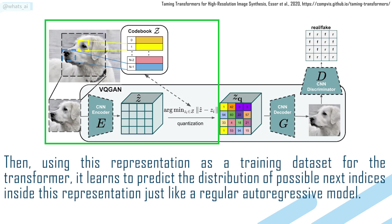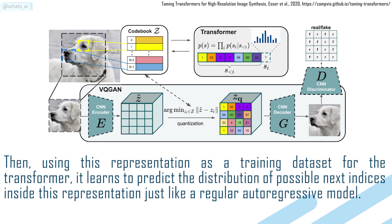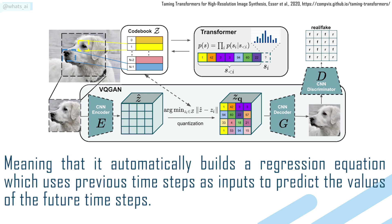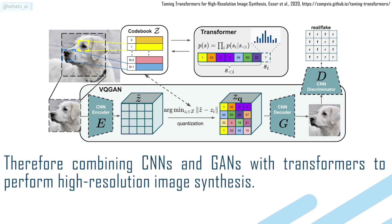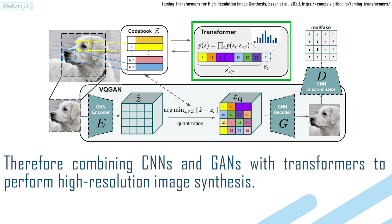Using this representation as a training dataset for the transformer, it learns to predict the distribution of possible next indices inside this representation, just like a regular autoregressive model — meaning that it automatically builds a regression equation which uses previous timesteps as inputs to predict the values of future timesteps. Therefore, combining CNNs and GANs with transformers to perform high-resolution image synthesis.